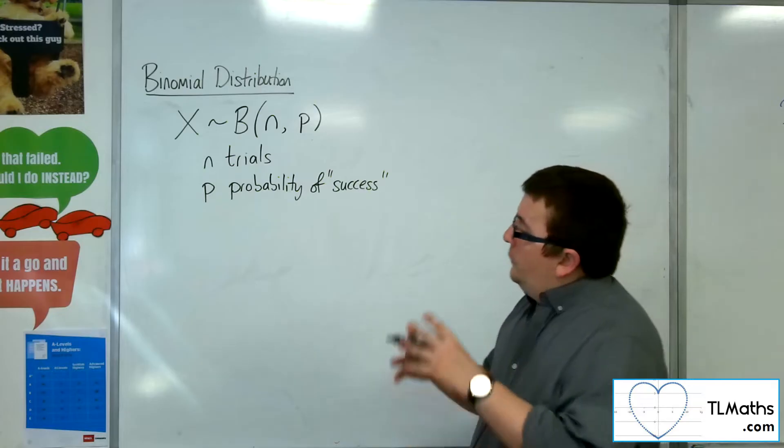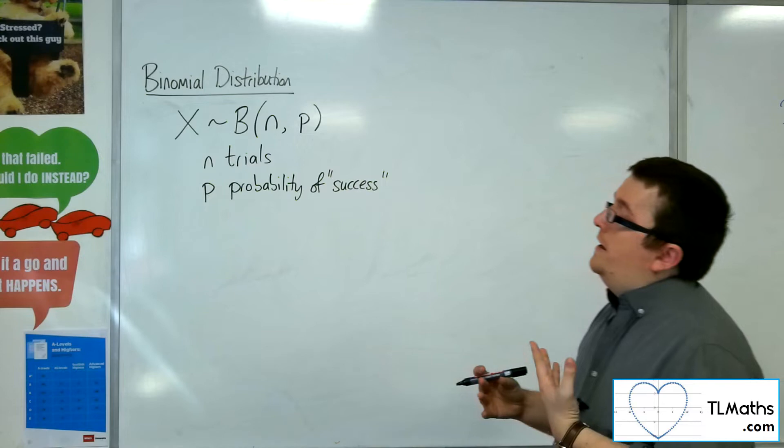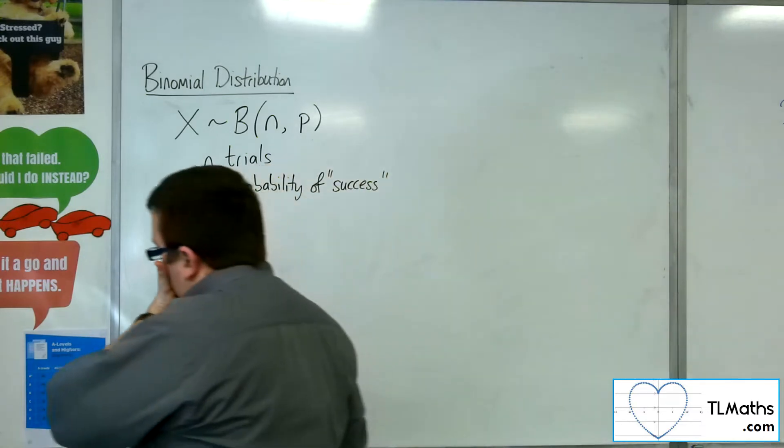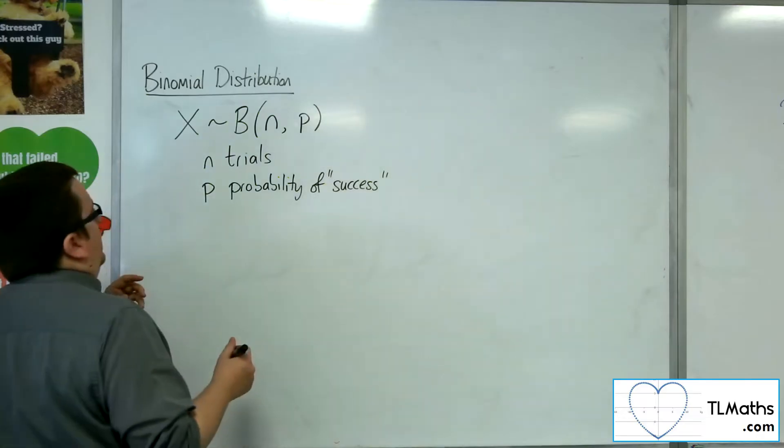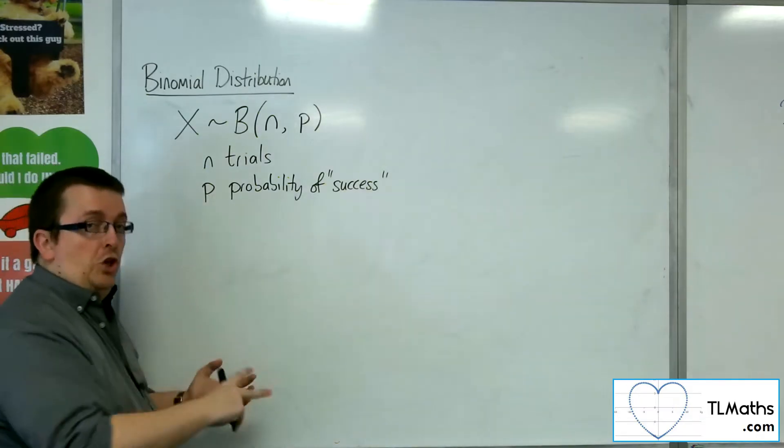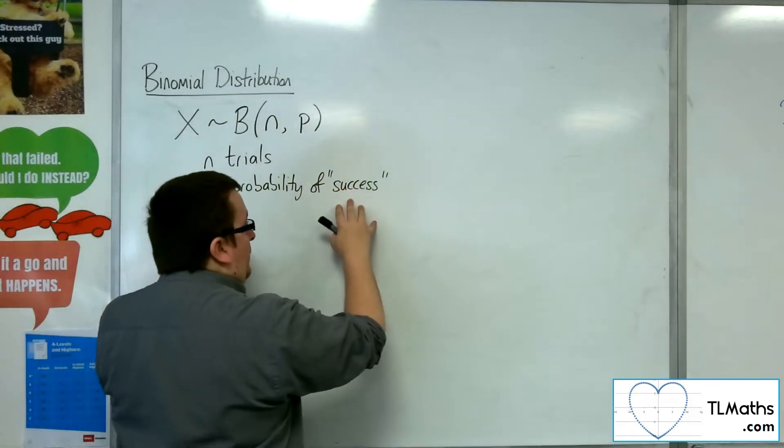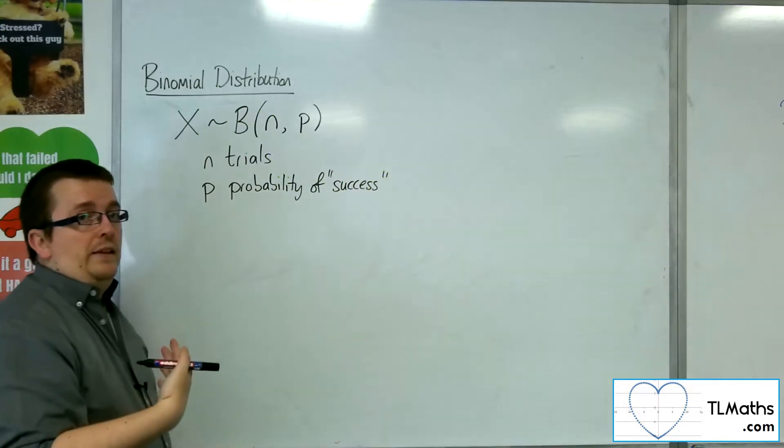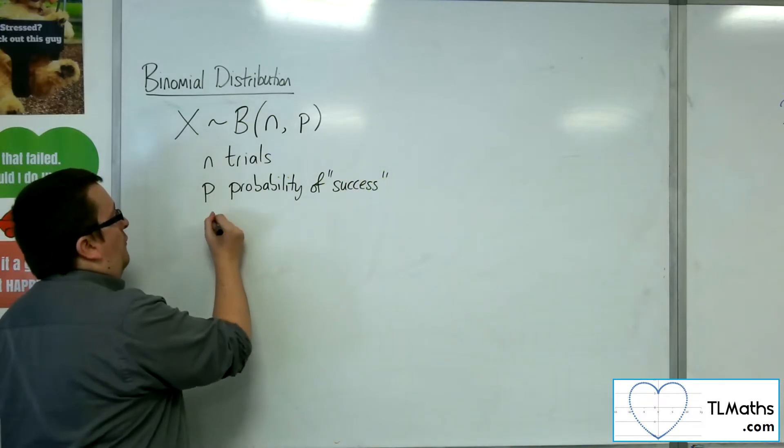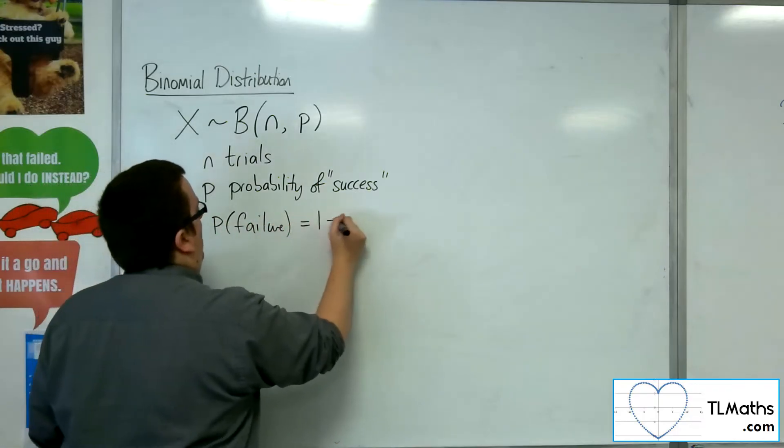So there's a few caveats that must go with this, to make sure that you're clear that a binomial distribution is appropriate. The fact that it is binomial means that there are two possible outcomes. So that's why we've got this probability of success, and the alternative is failure. So the probability of failure is 1 minus p.